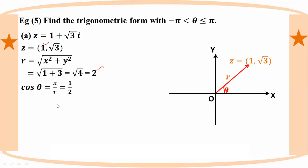For theta, cos theta equals 1 by 2 and sin theta equals root 3 by 2. The basic acute angle gives us theta equals 60 degrees, which is pi by 3. Since both sin and cos ratios are positive, the angle is in the first quadrant.